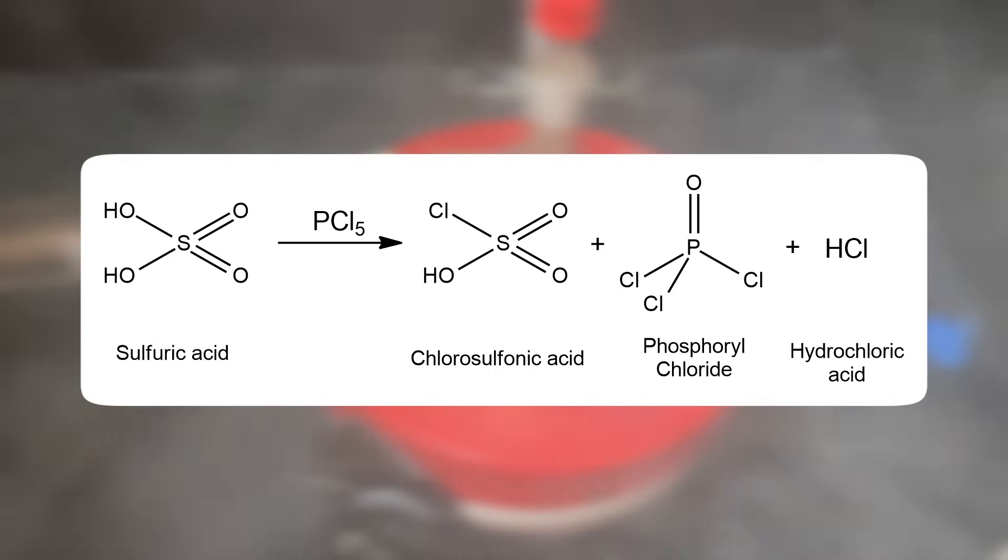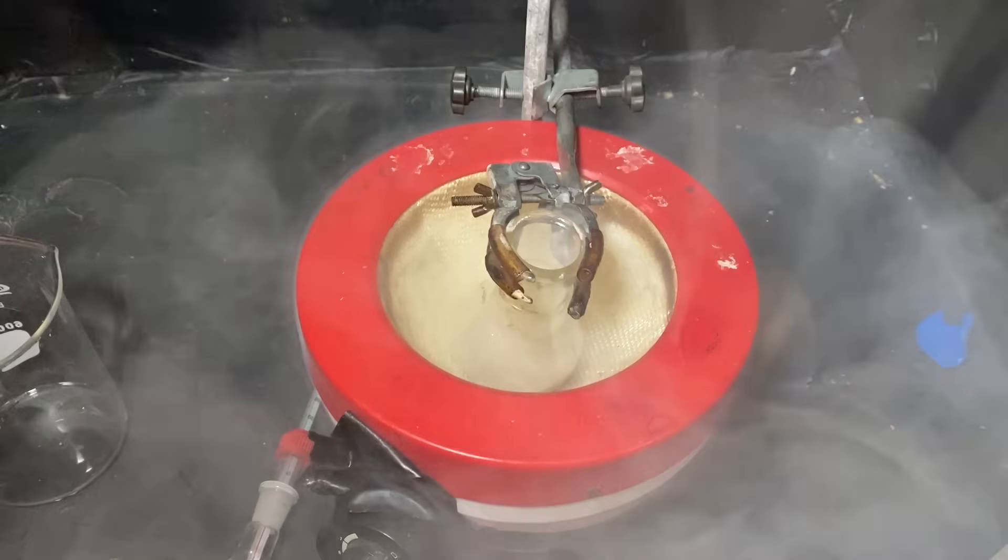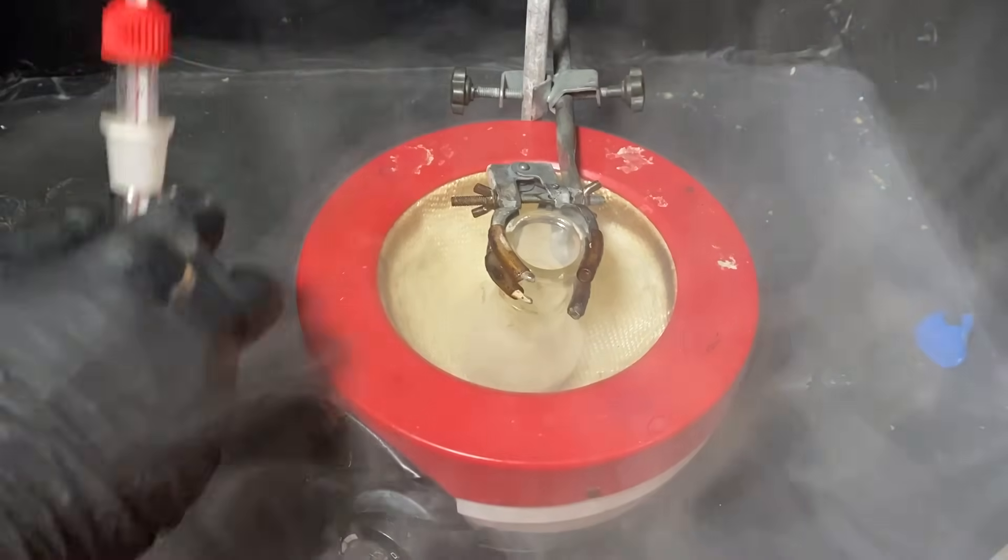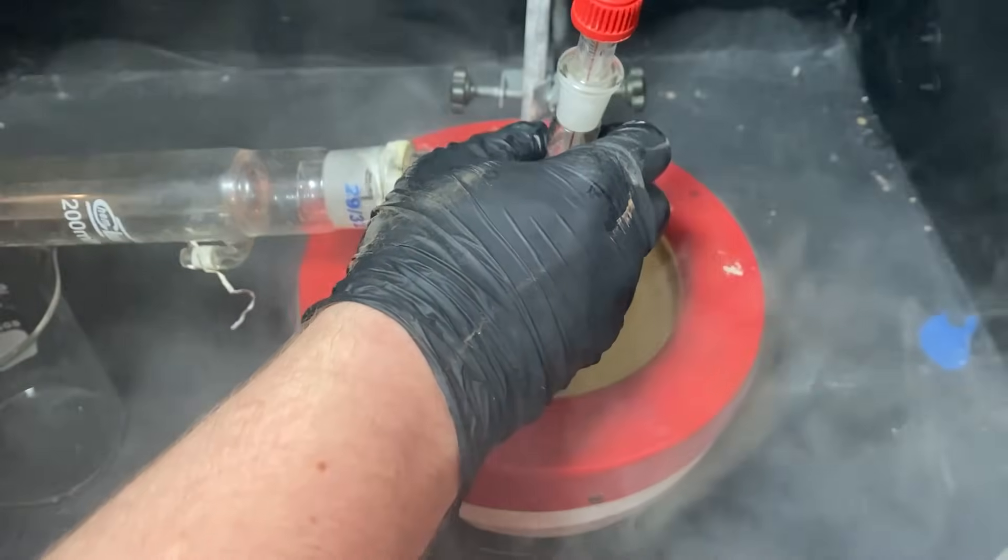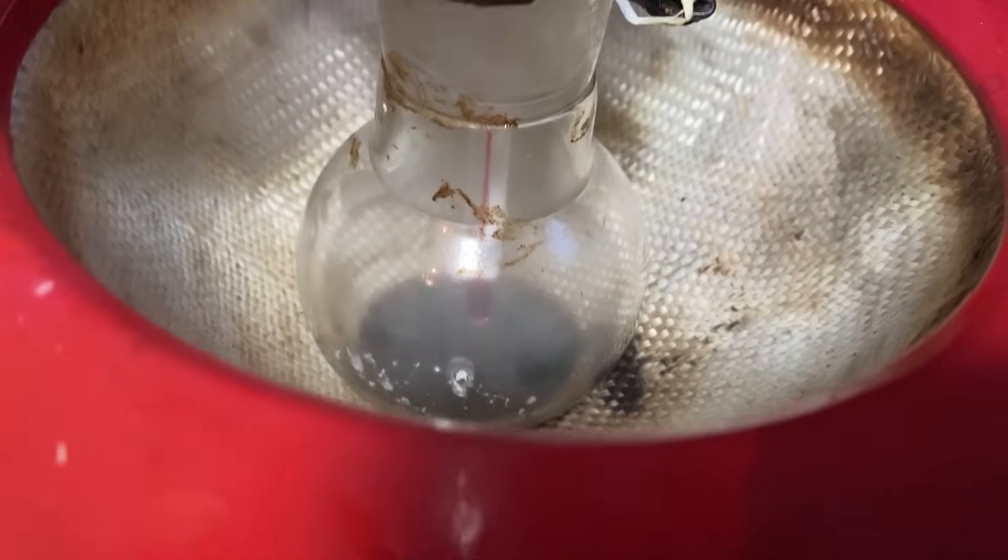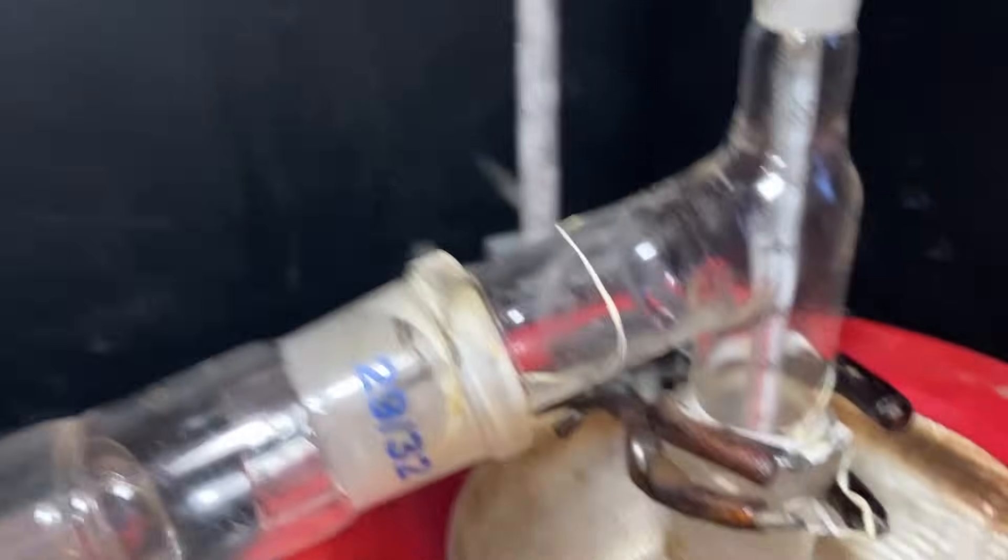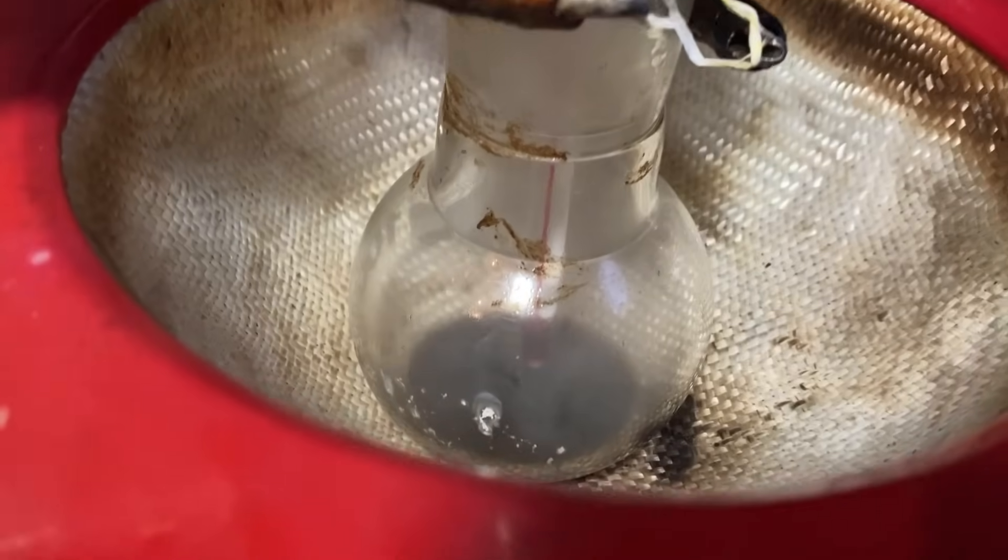And you can separate the two using distillation. So I've quickly attached a distillation apparatus to the boiling flask, which I've prepared beforehand. Then I've cranked the heating of my heating mantle to the max. This part is pretty boring, so I'll spare you the details.